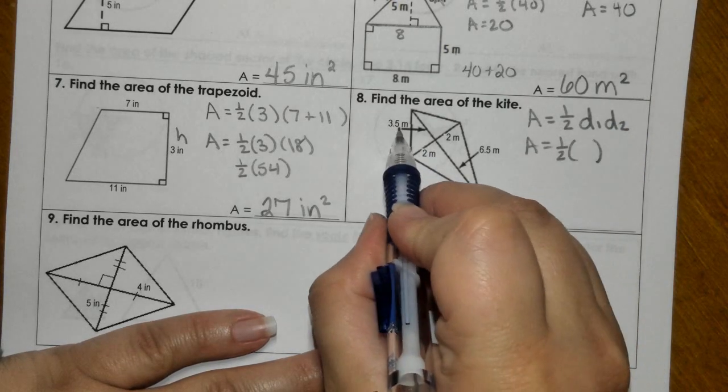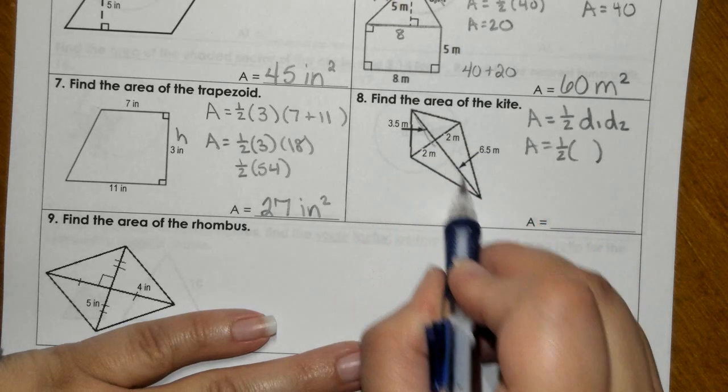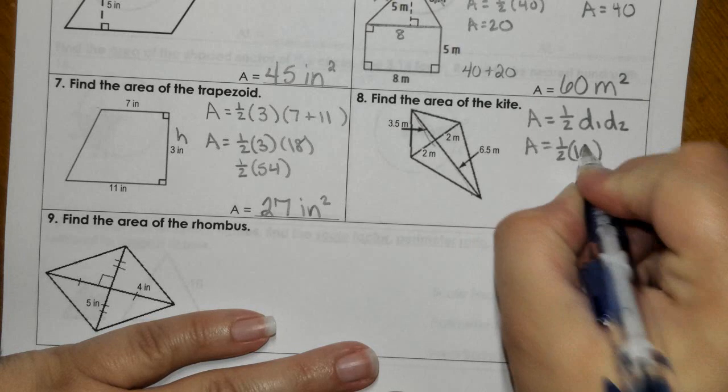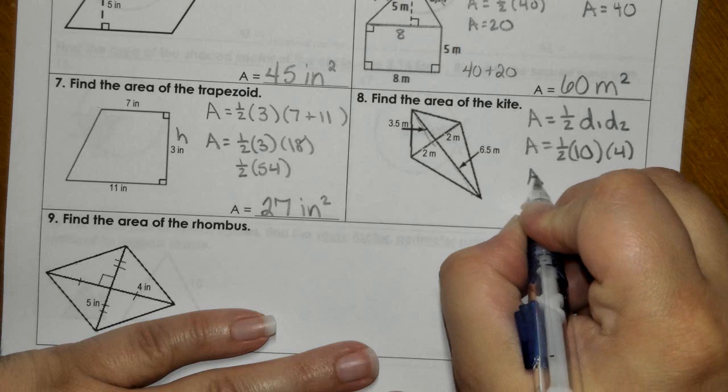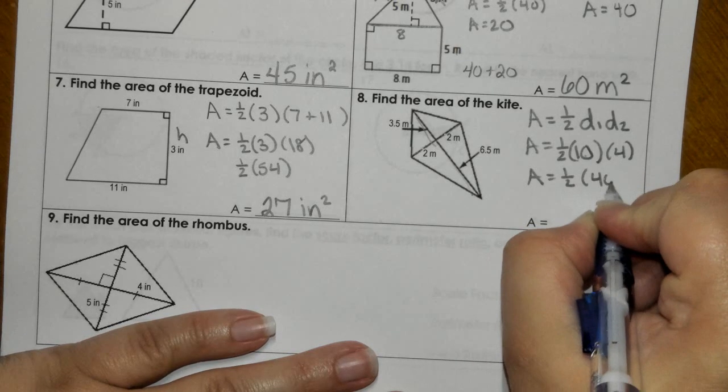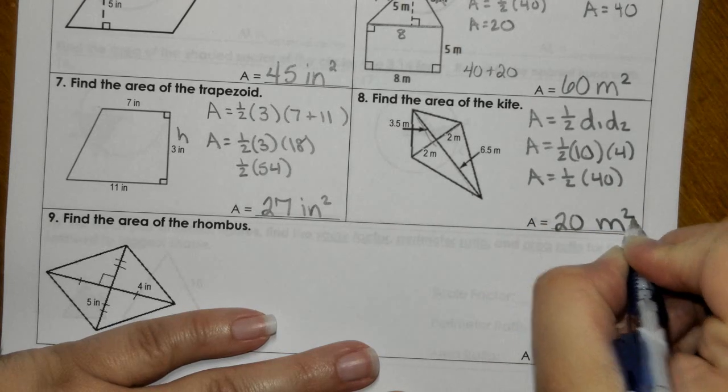So 3.5 plus 6.5 is 10. Diagonal two, 2 plus 2 is 4. So 10 times 4 is 40. Half of 40 is 20, and that would be meters squared.